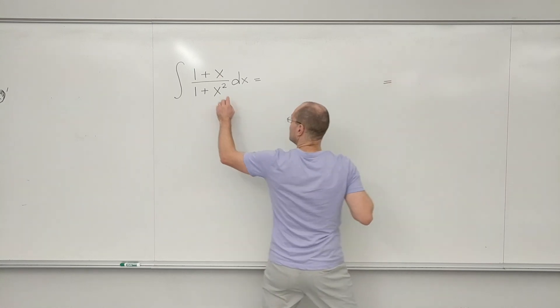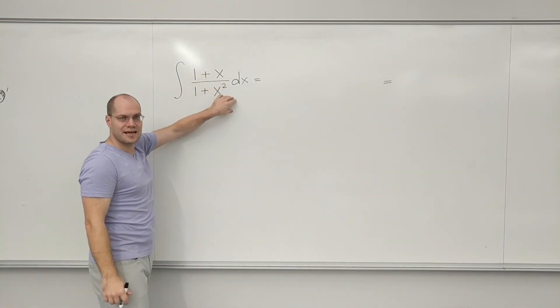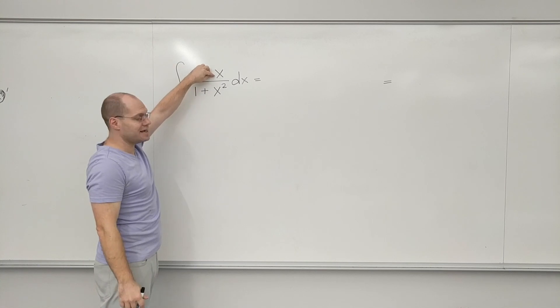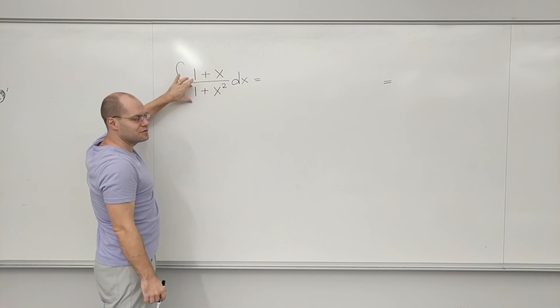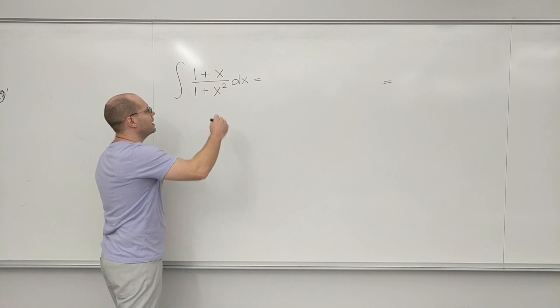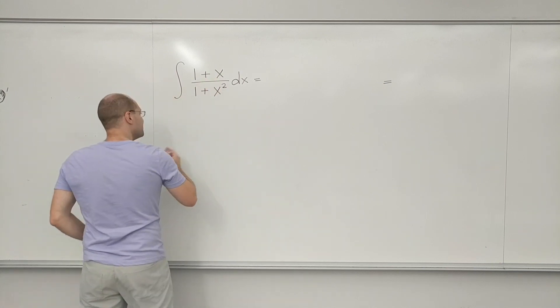I'll fill in the details. But I think 1 over this gives me arctan. And then this x is not quite the derivative of this. It's missing a factor of 2. So I would have to put it in artificially.